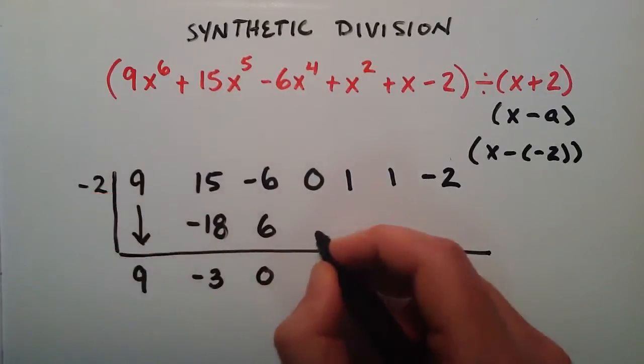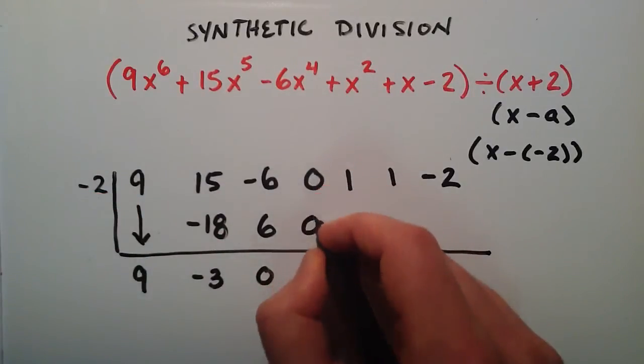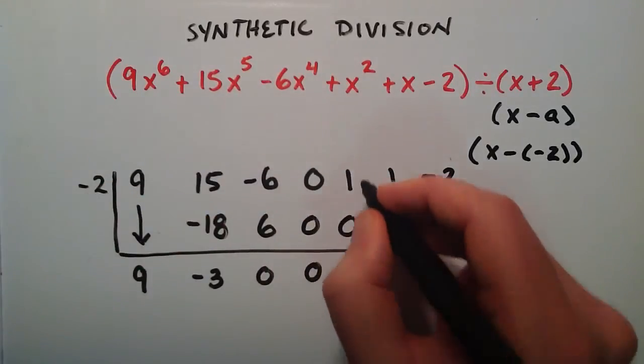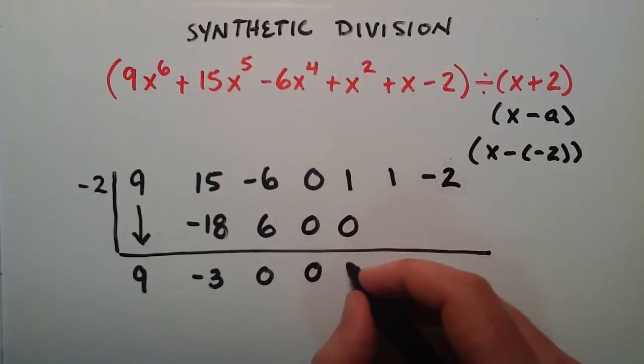0 times our negative 2 is 0. 0 plus 0 is 0. 0 times our negative 2 once again is 0.